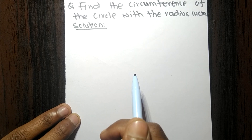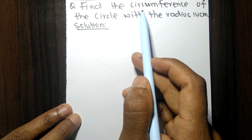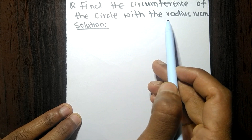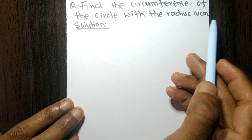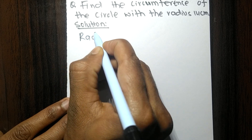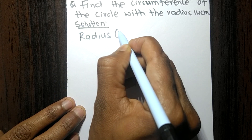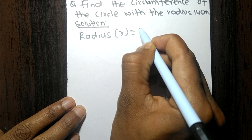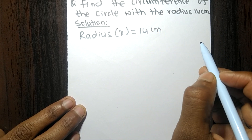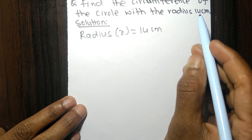In this video we shall solve: find the circumference of a circle with a radius of 14 centimeters. The radius, denoted by r, is given as 14 centimeters, and we have to find its circumference.